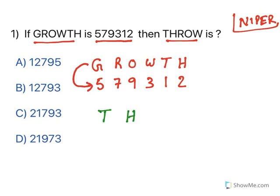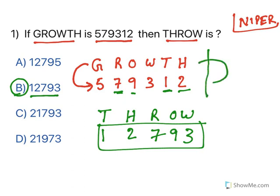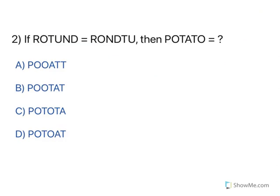Now what is asked? You need to find out what T-H-R-O-W is. Look at the one given on the top. T corresponds to 1, H corresponds to 2, R corresponds to 7, O is 9, W is 3. So THROW corresponds to 1, 2, 7, 9, 3. In order to solve such kind of questions, you need to write this out and find which alphabet corresponds to which numerical value. These are easy questions when you understand the logic behind them.